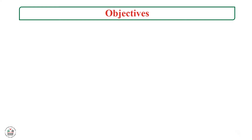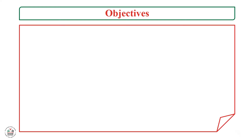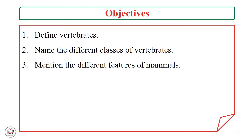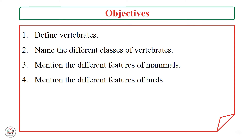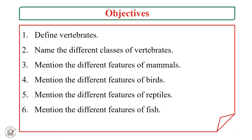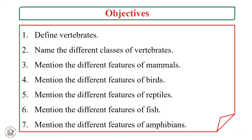Our objectives for this lesson are: first, to define vertebrates; second, to name the different classes of vertebrates; third, to mention the different features of mammals; fourth, to mention the different features of birds; fifth, to mention the different features of reptiles; and finally, to mention the different features of fish and amphibians.